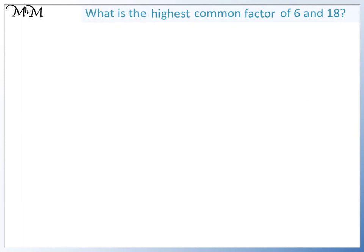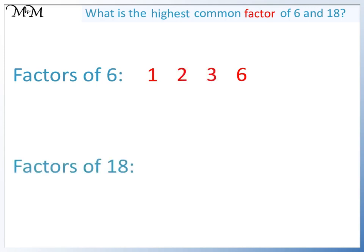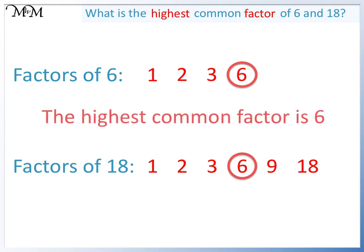What is the highest common factor of 6 and 18? The factors of 6 are 1 and 6 and 2 and 3. The factors of 18 are 1 times 18, 2 times 9, and 3 times 6. The largest number in both lists is 6. The highest common factor is 6.